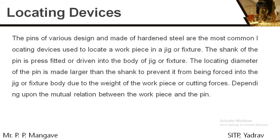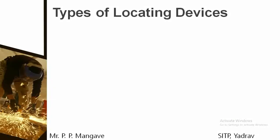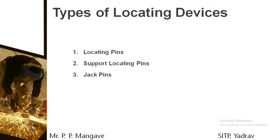Depending upon the different workpieces, the locating devices are further classified into different types. The first type is locating pin, second is support locating pins, third is jack pins, fourth are V locators, and last is the diamond pin locators. These are the various types of locating devices used for locating a workpiece over a drilling jig or fixture.